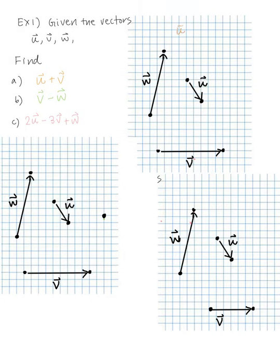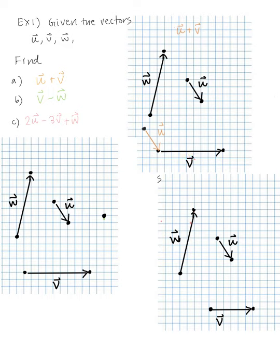Let's do U plus V. Vector U is here and vector V is here. To add U plus V, I draw a parallel copy of vector U pointing downward from V's initial point. U plus V is this vector here, going in this direction.